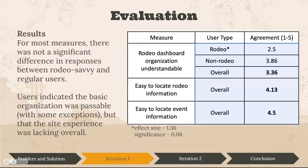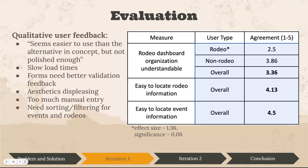Here's a summary of some of the data we collected. On the numbers on the far right in this table, people agreed from one to five on how understandable it was, how easy to locate the rodeo information was, and how easy to locate event information was. We did well in some of these, and in some we definitely had improvements to be made. For qualitative feedback, some quotes included: 'seems easier to use than the alternative, but not polished enough,' 'slow load times,' 'forms need better validation,' 'aesthetics displeasing,' 'too much manual entry,' and 'needs sorting and filtering for events and rodeos.'